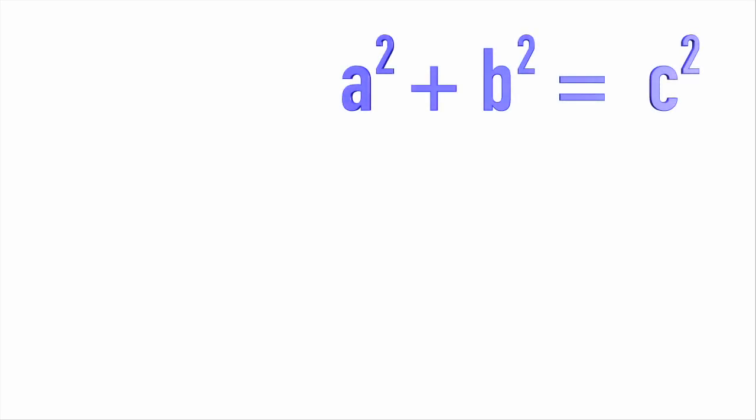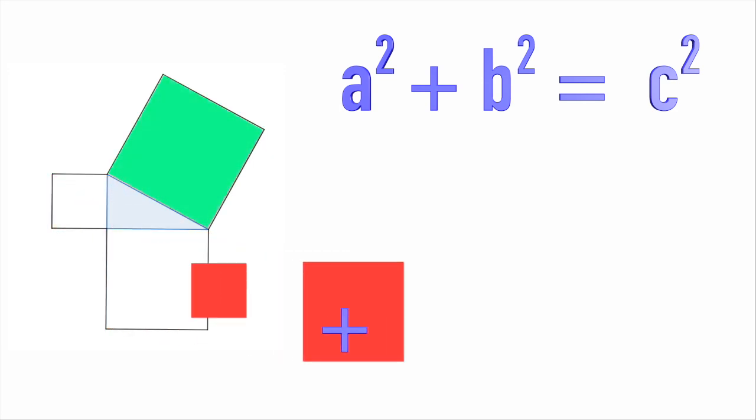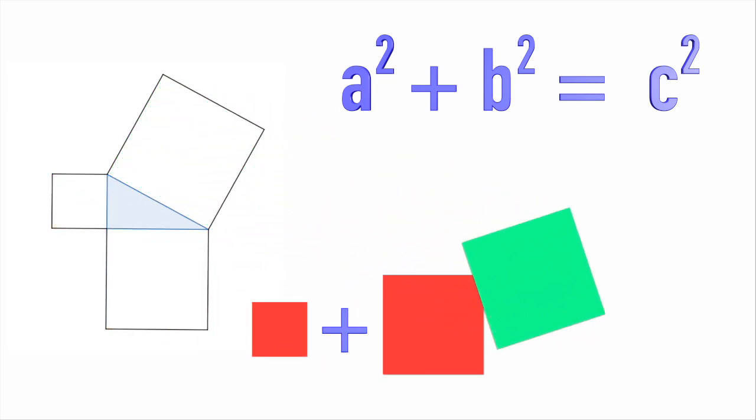Pythagoras' theorem is famous, and this is the most famous way to show it. Given a right-angled triangle, build squares on each side, and then the sum of the two smaller ones is equal to the bigger one.